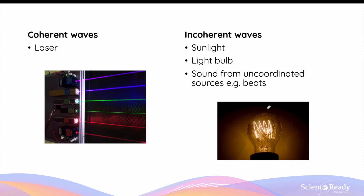Finally, let's briefly talk about different sources of coherent and incoherent waves. Most of the time, sources of light or waves around us produce incoherent waves — waves with different frequencies and variable phase differences. This includes sunlight, light bulbs, and sound waves from uncoordinated sources, which can be mixed together to produce a beat. A very common example of a source that produces coherent waves are lasers — lasers produce light waves of one type of wavelength or frequency, and the waves propagate in the same direction to maintain their phase difference.